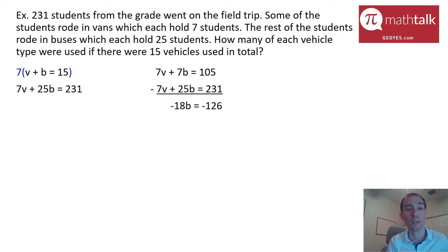So I'm going to subtract the two equations. 7 minus 7 goes away. It's gone. 7 buses minus 25 buses is negative 18 buses. And then 105 minus 231 is negative 126. So now I just have one more step to solve. I've got to divide both sides by negative 18. And when I do that using a calculator, I get buses are 7.